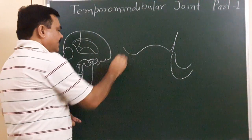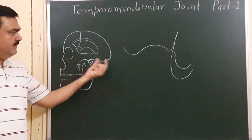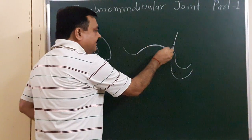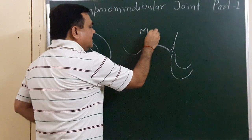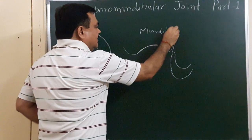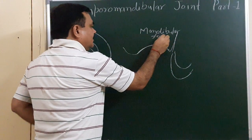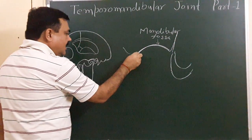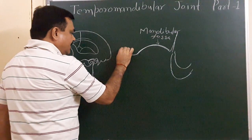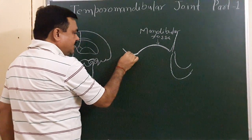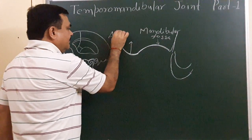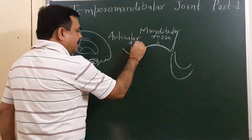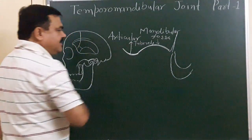This is the enlarged part of this region. This is the mandibular fossa, here is the articular eminence, and this is the articular tubercle.